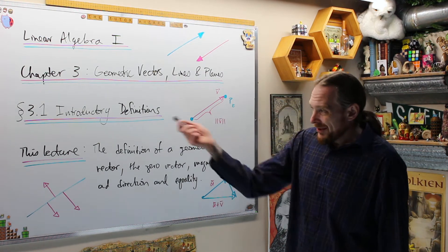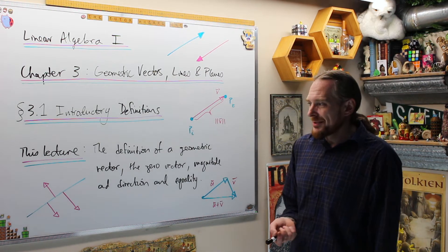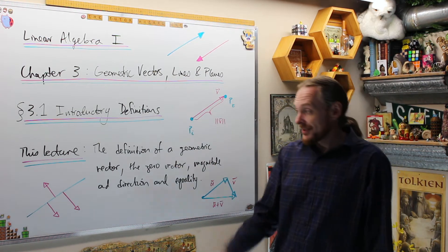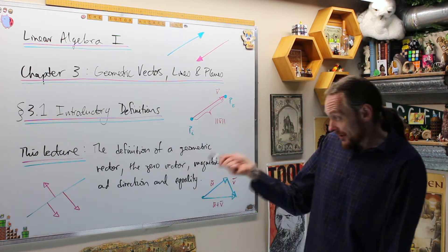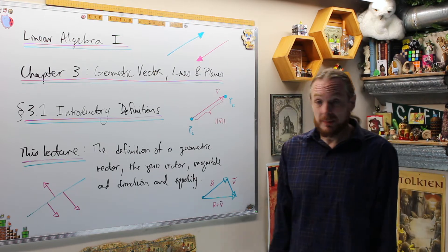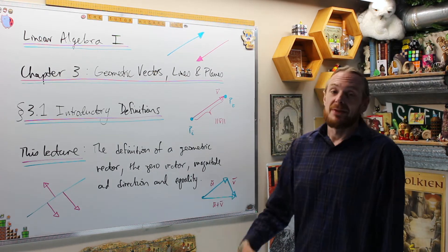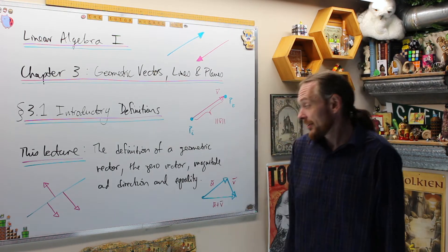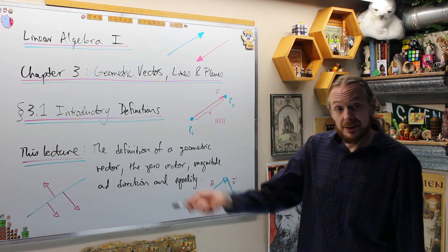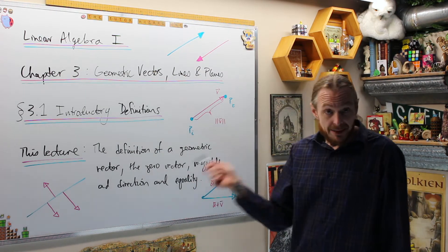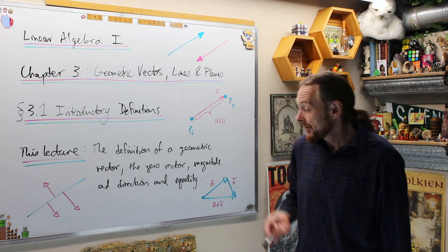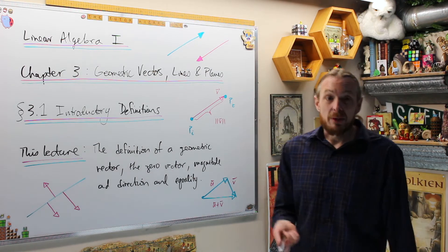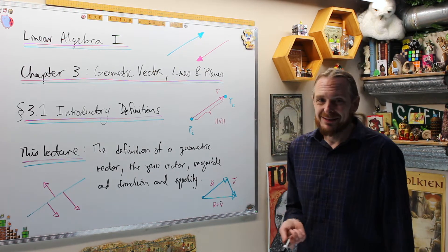Section 3.1 is going to be introductory definitions. Specifically, this lecture we're going to cover the definition of a geometric vector, the zero vector, magnitude and direction, the two main properties of a vector, and equality of vectors.